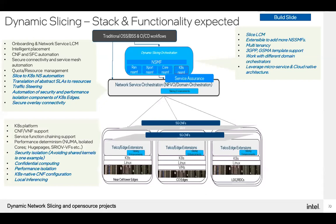At the edges, you require security and performance isolation enhancements, and confidential computing — if somebody really wants workloads to be completely confidential even from sophisticated attackers who have access to the edge location. Local inferencing is also very important: if you want dynamic SLA enforcement, inferencing needs to happen locally within each edge location. For service assurance, you sometimes need a predictive way of knowing things, which is why an ML/DL framework on top of existing service assurance platforms is important.